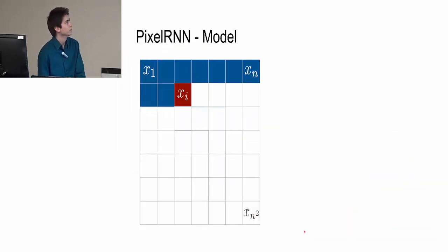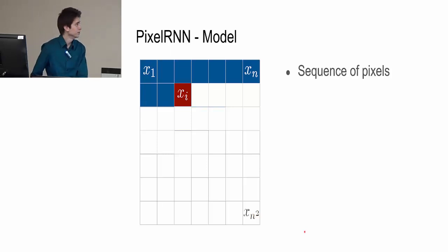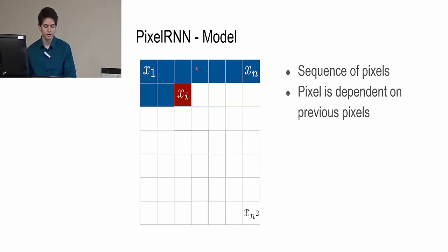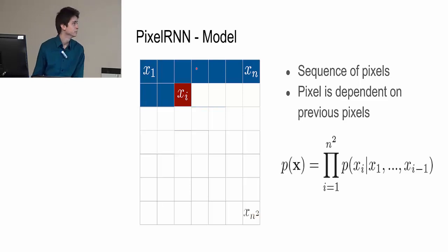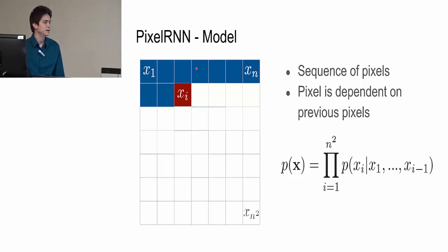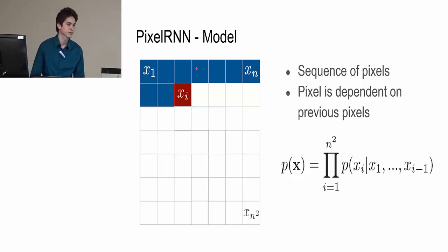Now I'll go over how Pixel RNN works as an overview. Pixel RNN treats an image as a sequence of pixels going row by row, where each pixel is dependent on the previous pixels that have been generated already. Formally, they represent the probability of an image X as the product of conditional probabilities for each pixel, where the probability of pixel Xi is conditioned on all the previous pixels.